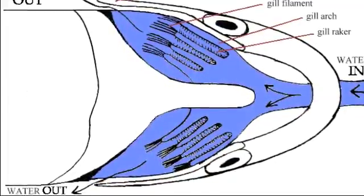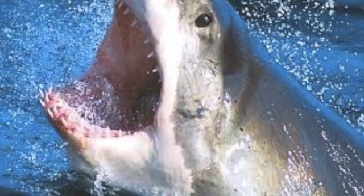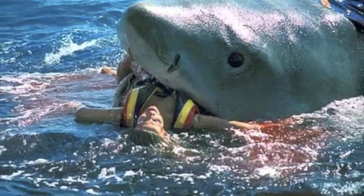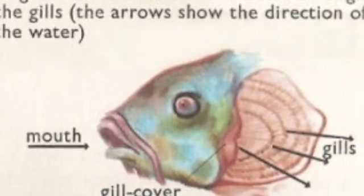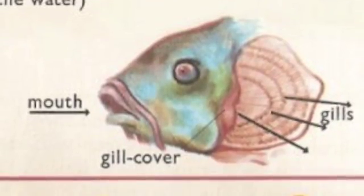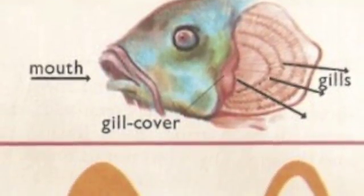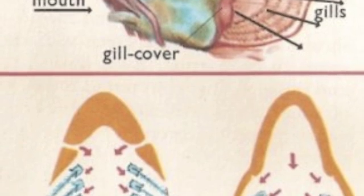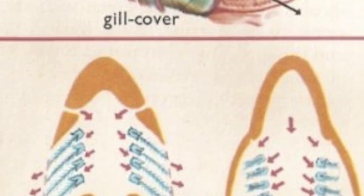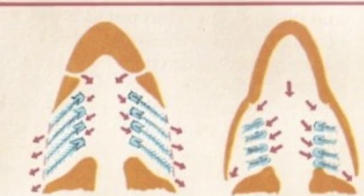Some species of sharks use this system. When they swim, water flows into the mouth and across the gills. Because these sharks rely on this technique, they must keep swimming in order to respire.